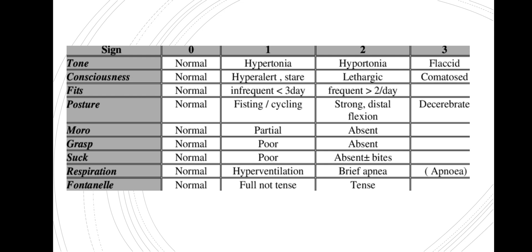For respirations: if they're within the normal range that's 0, if they're hyperventilating that's 1, if there are episodes of brief apnea that's 2, and if there's apnea that's 3. For the fontanel — specifically the anterior fontanel: if it's level that's 0, if it's full but not tense that's 1, and if it's tense that's 2. These scores add up to a maximum of 22.